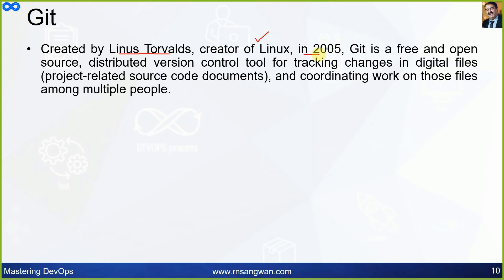Linus Torvalds launched Linux in 1991 under open source terms and adopted the GPL in 1992. In 2005, he created Git — a free and open source distributed version control tool for tracking changes in digital files such as project source code and documents, and for coordinating work on those files among multiple people.